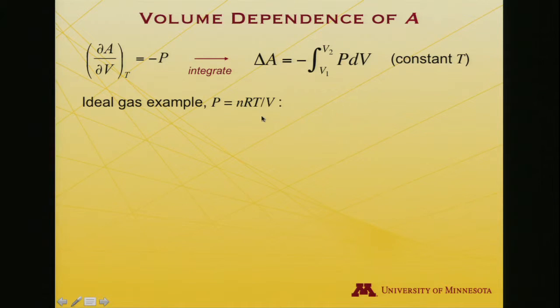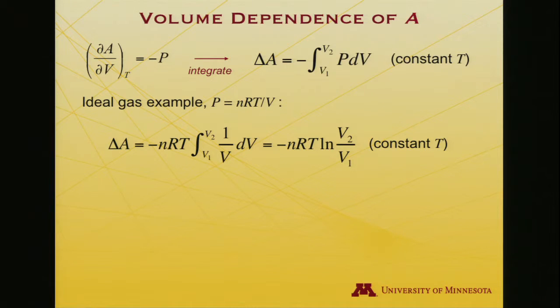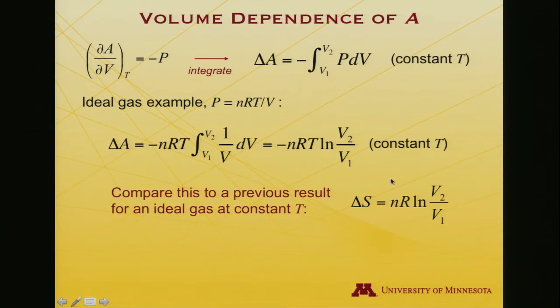And let's use an ideal gas as an example. So I know in that case pressure is nRT over V. So when I make that substitution, temperature is a constant now because we're working at constant temperature. And so we'll pull that out with n and the universal gas constant. We get delta A is minus nRT, the integral dV over V. So that'll give us the log of V2 over V1. And I want to compare this to a previous result for an ideal gas at constant temperature where delta S is equal to nR log V2 over V1. And so notice the relationship between these two is that delta A is minus T times delta S.